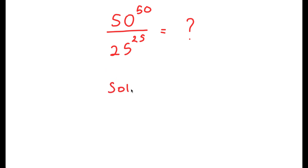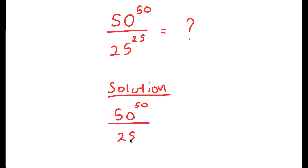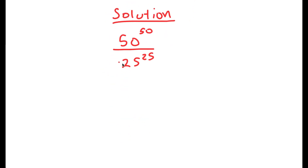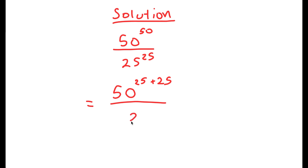To start, I have 50 to the power of 50 over 25 to the power of 25, and I'm going to first rewrite this as 50 to the power of 25 plus 25. So now I have 50 to the power of 25 plus 25 over 25 to the power of 25.